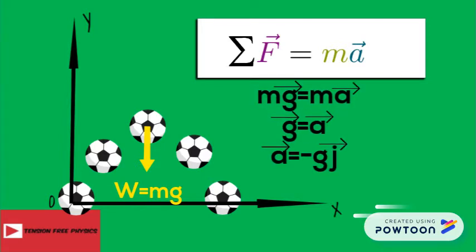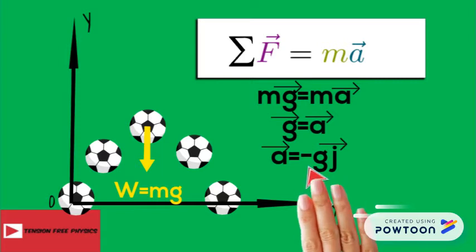Now if you want to put it as a vector form, then the acceleration vector a is equal to minus g j. The minus sign is added because the positive y-axis is directed upwards while the gravity is directed downwards.